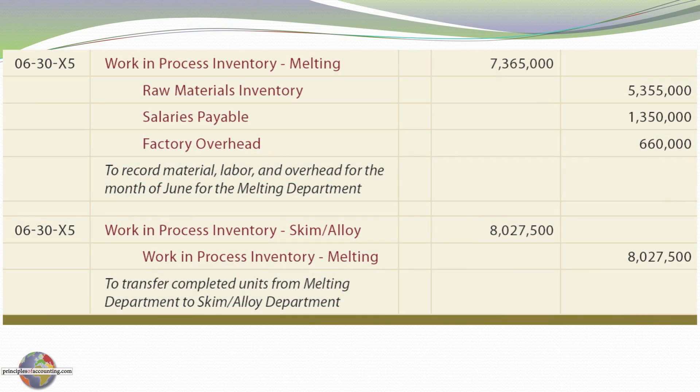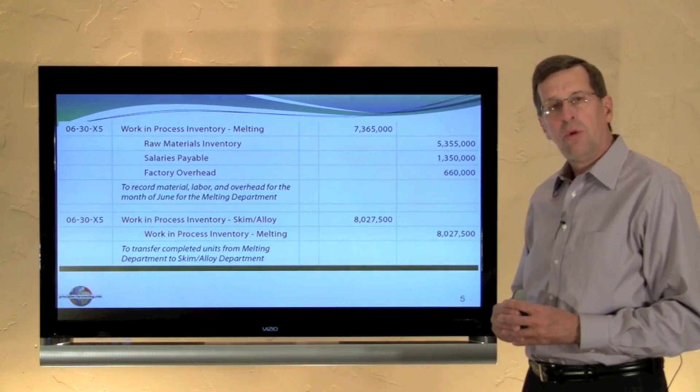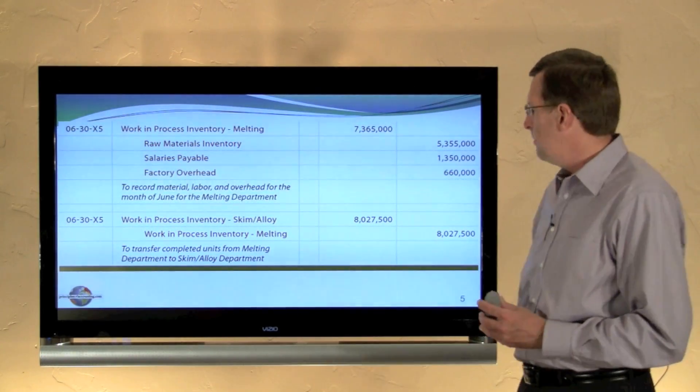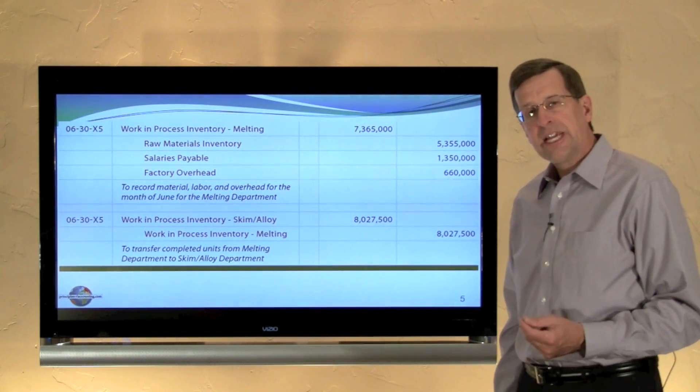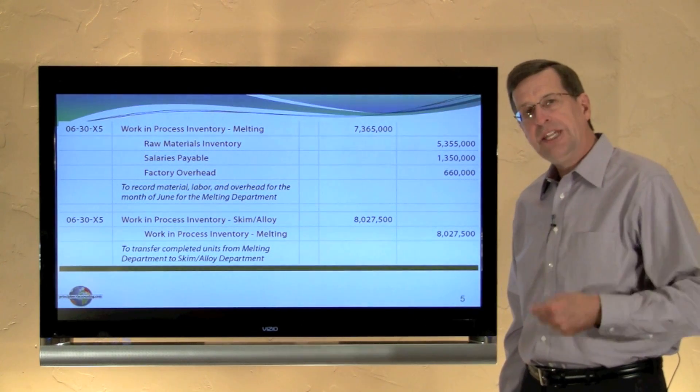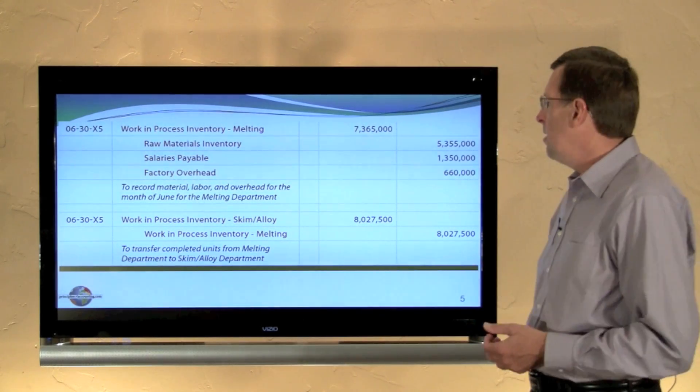Let's look at how those general entries work. Work in process is being debited for $7,365,000 — that is the cost incurred for the month, broken down between material, labor, and overhead components. When the $8,027,500 was completed, we're debiting work in process for the next department — skim alloy — and crediting work in process in the melting department. Remember from the first module how we showed cost flowing from each department to the next? Here's the general entry to do that. The textbook shows journal entries for each department showing the complete transfer of cost from department to department.